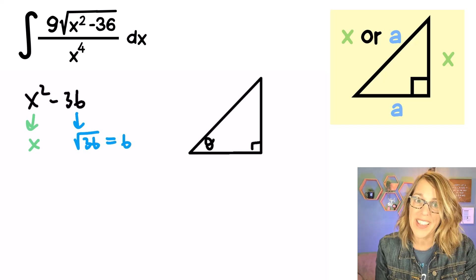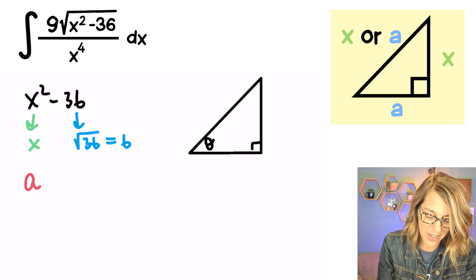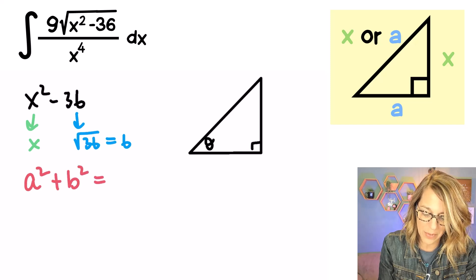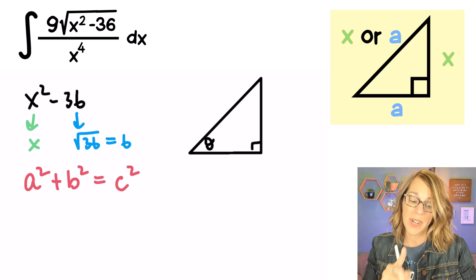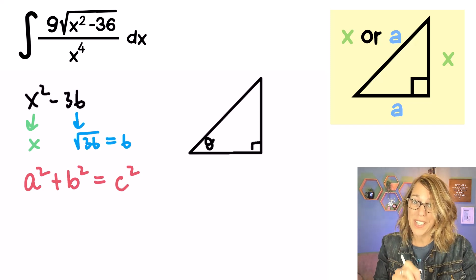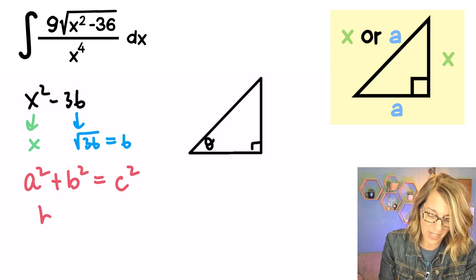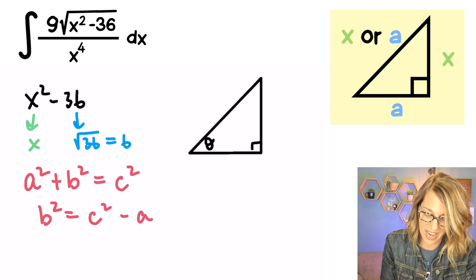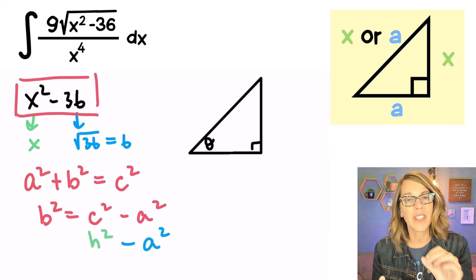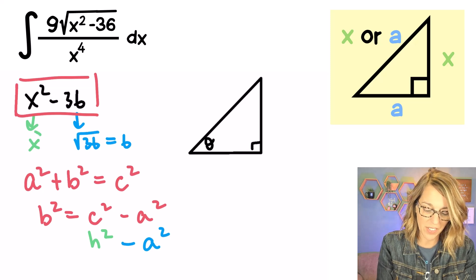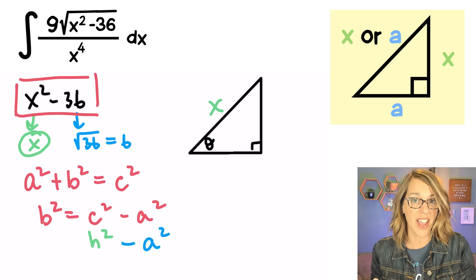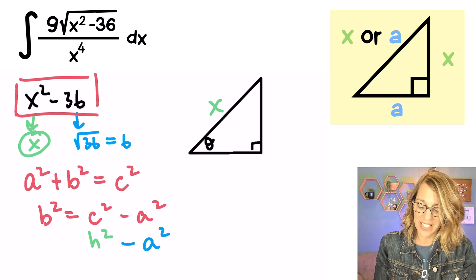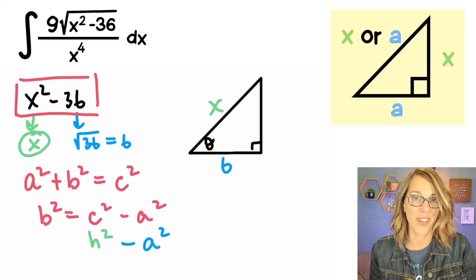I'm going to use the Pythagorean theorem to help me label my triangle: a squared plus b squared equals c squared, with c as our hypotenuse. But what I've got here is a difference of squares, so I'm going to create a difference from my Pythagorean theorem — subtracting a squared. In this difference, the hypotenuse comes first, so my hypotenuse is x and my value 6 lives on the horizontal leg.